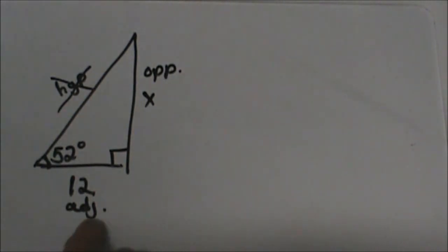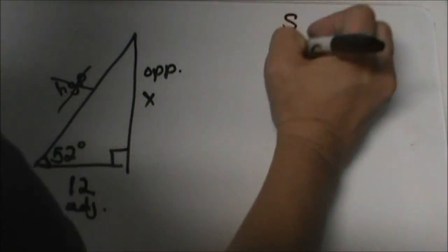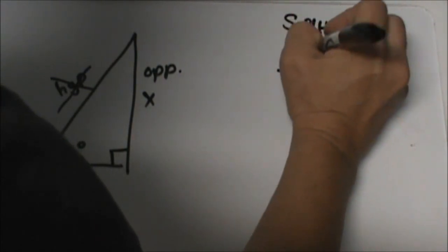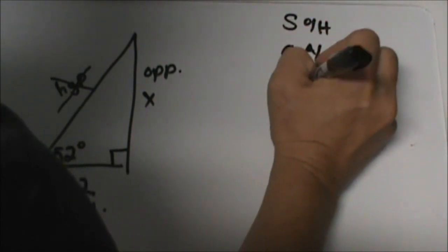So go back and look at your reference. Which trig ratio? I will jot them up here. Opposite, hypotenuse, adjacent, hypotenuse, opposite, adjacent.